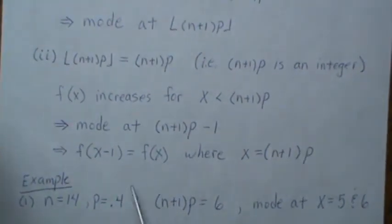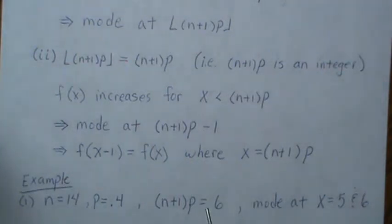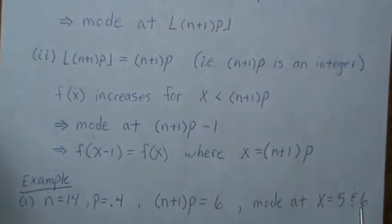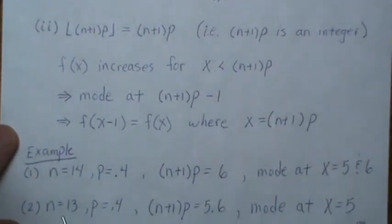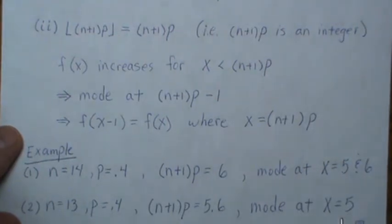So as a quick example, if n is 14 and p is 0.4, you take those together, and it's 6. So since this is an integer, it's a bimodal distribution at 5 and 6. If n is 13 and p is 0.4, we get this product is 5.6. So the mode is at 5. It's the floor of this number.